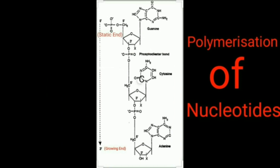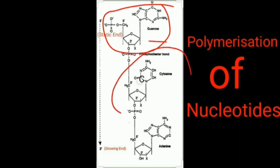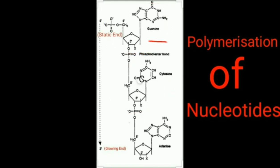In the polymerization of nucleotides, consider GTP — the nitrogen base is guanine — and the next nucleotide is CTP, since the nitrogen base is cytosine. The OH group at the 3' end of the GTP is going to attack the phosphate group at the 5' end of CTP, thereby forming a phosphodiester bond in the direction 3' to 5'.